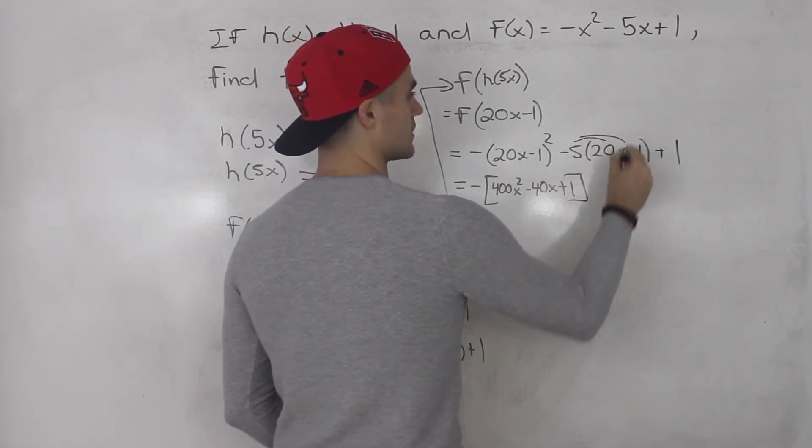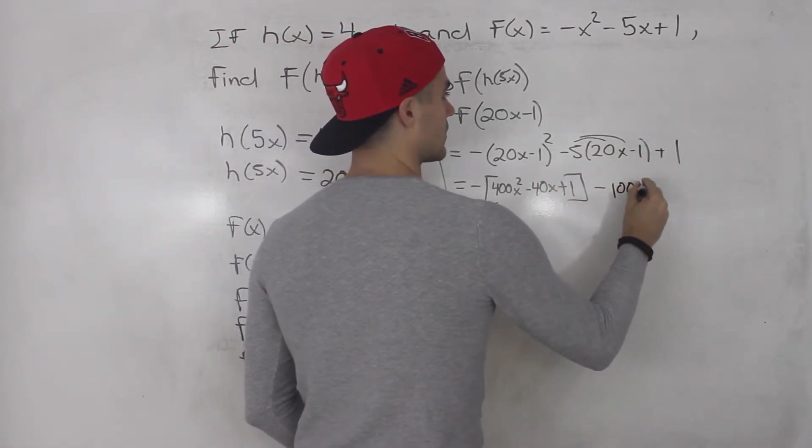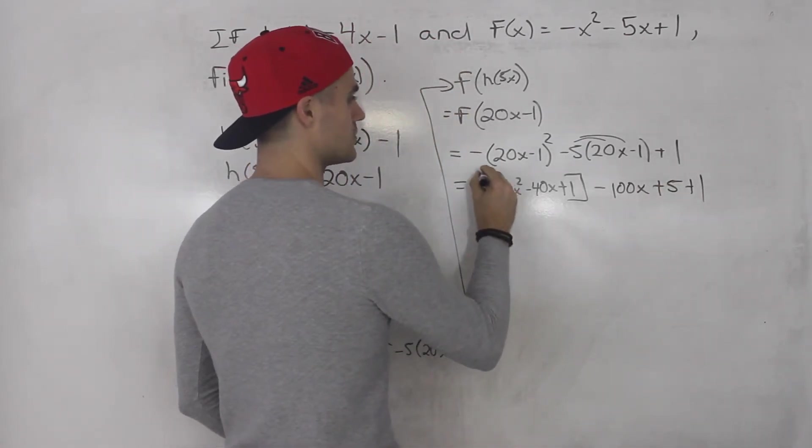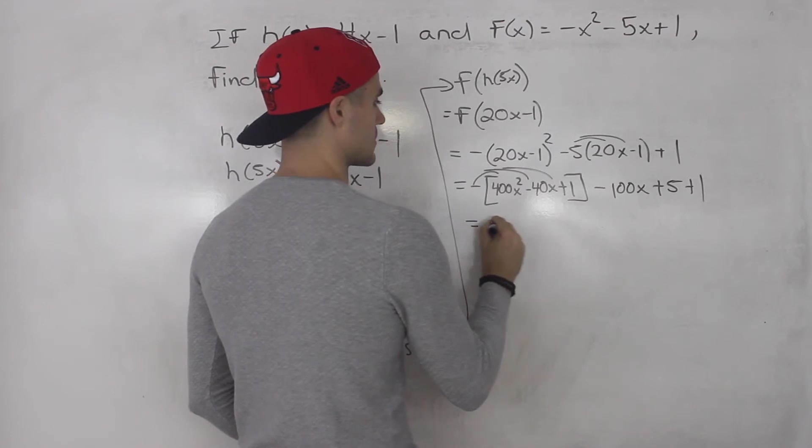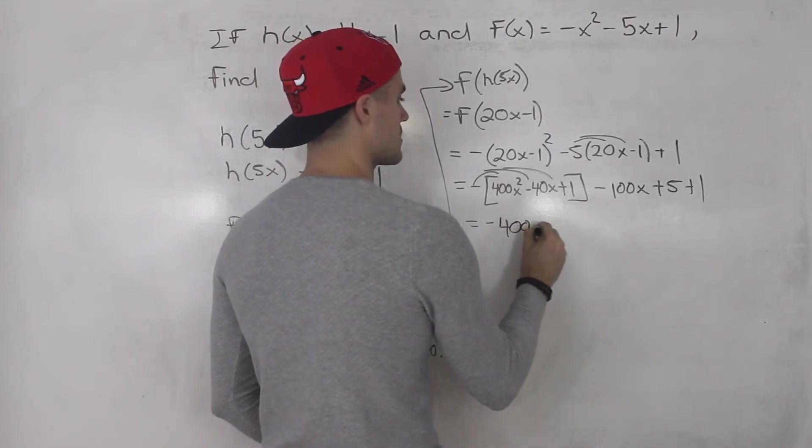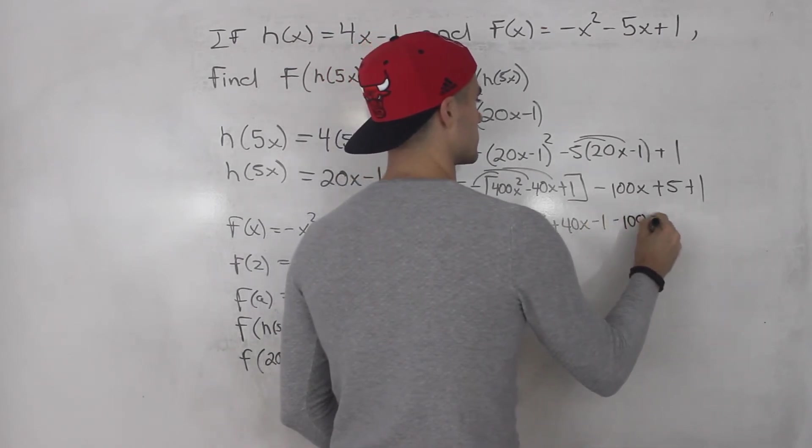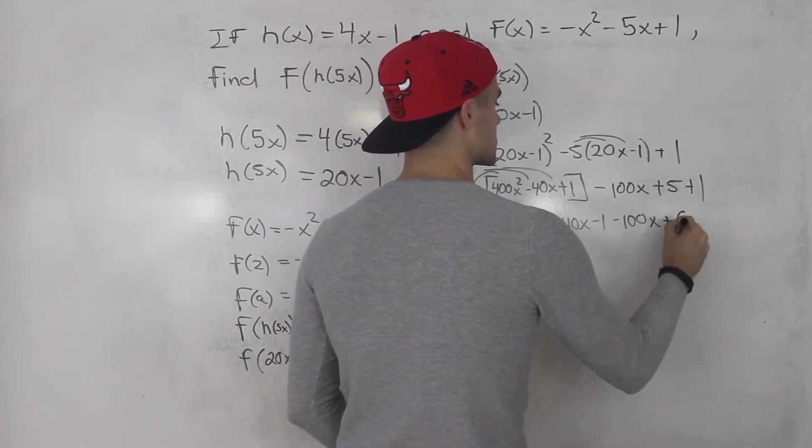And here we could distribute the -5 in the bracket, so -100x + 5 + 1, like that. Distribute the negative inside the bracket. So -400x² + 40x - 1 - 100x + 5 + 1 is just 6.